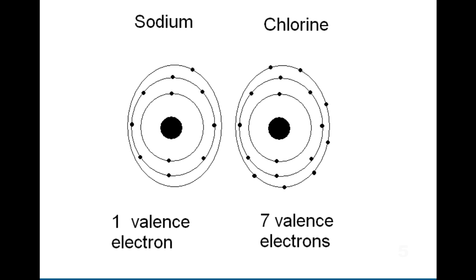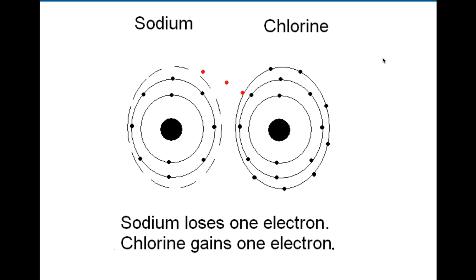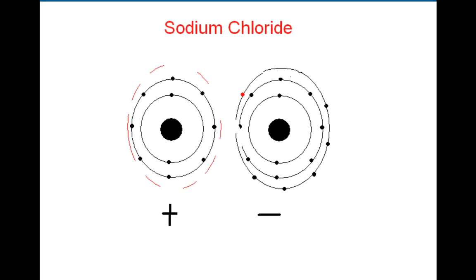Sodium has one electron on its valence shell, and chlorine has seven electrons on its valence shell. Separately, they are both extremely dangerous — in fact, deadly. But put them together and they become sodium chloride, which we know as table salt. That one electron from sodium bonds with chlorine, and two deadly atoms combine to form something we eat in abundance.